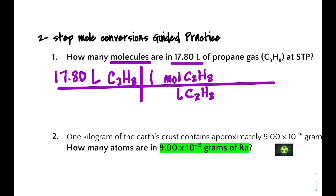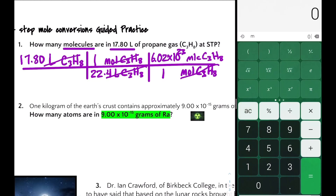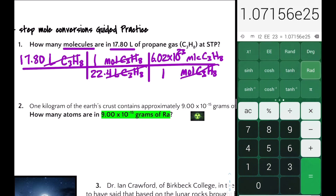Remember the conversion factor: one mole equals 22.4 liters of any gas at STP. Our liters cancel, and now we're going to convert from moles to molecules. Remember it's one mole equals 6.02×10²³ molecules of propane. Let's get our calculators out and solve. Remember moles cancel. Multiply the top: 17.80 times 6.02×10²³, then divide by the bottom, which is 22.4.